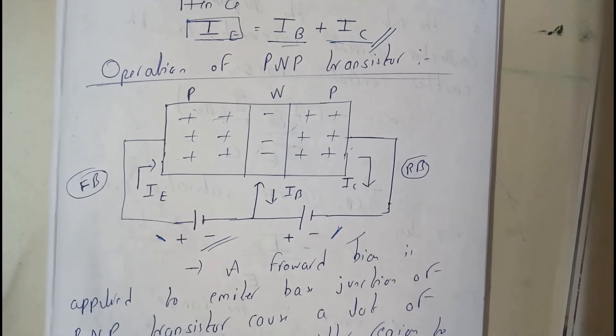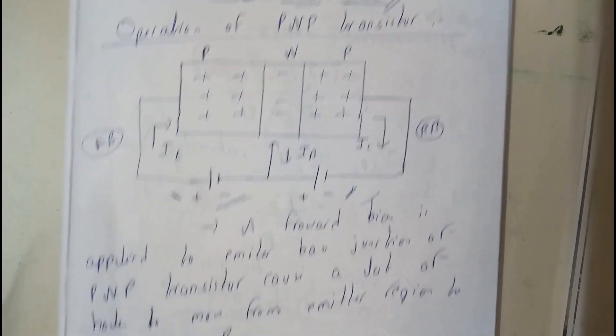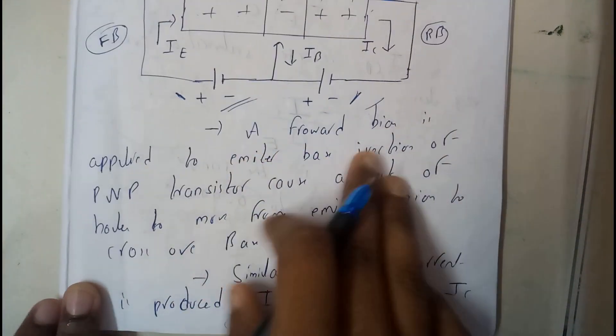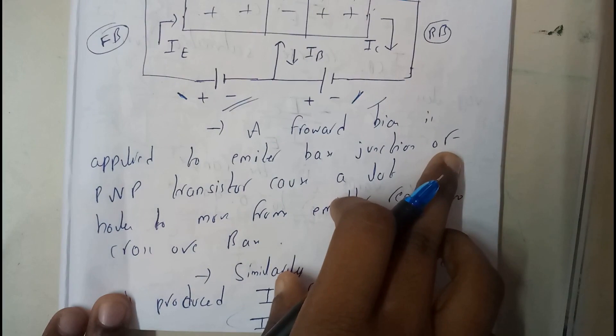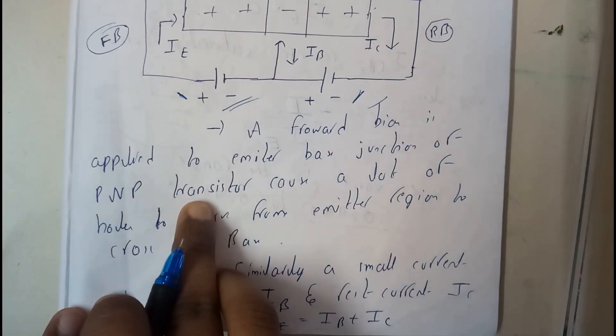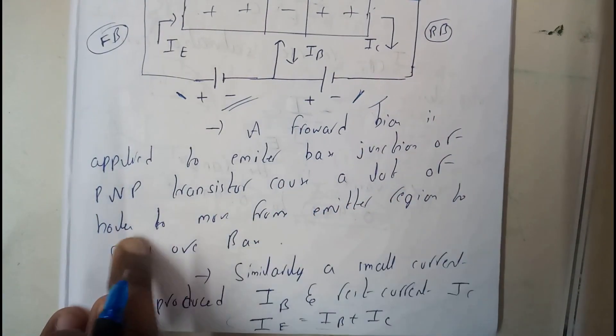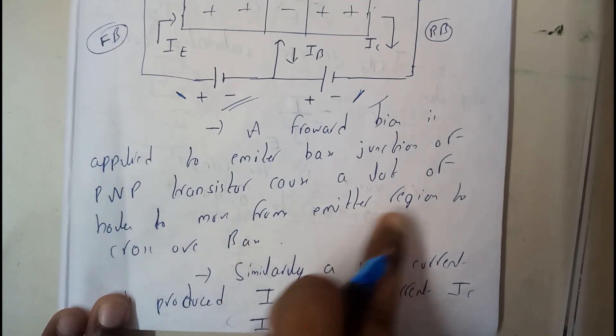Now let us further continue our discussion. Basically, a forward bias is applied to emitter-base junction of the PNP transistor, causing a lot of holes to move from emitter region to cross over the base.